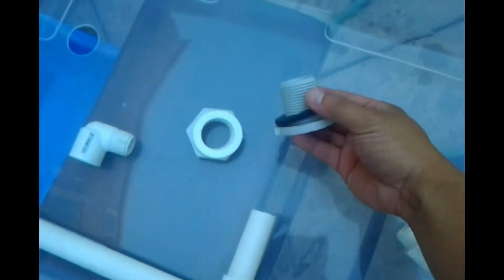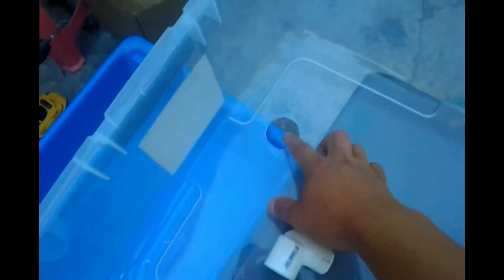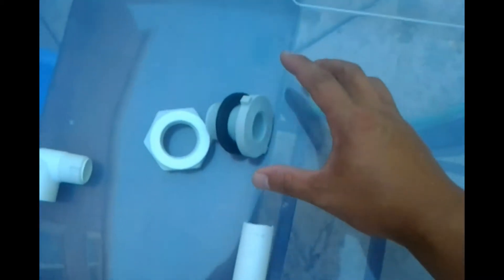What you really want to go get is a bulkhead, so it can have a waterproof seal around the hole that you're going to cut, and this is how it's going to be assembled.